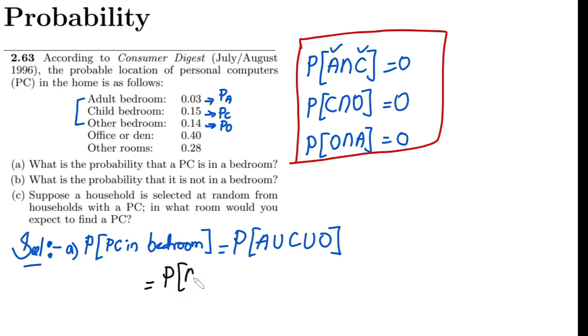So if I have this, what do I have to do? I can very easily see that it will be the probability that it is in adult room plus the probability that it is in child room plus the probability that in other rooms.